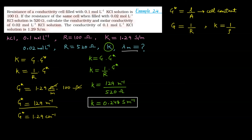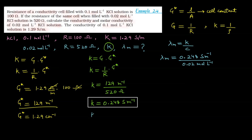और क्या calculate करना है? Molar conductivity। Molar conductivity क्या होता है? λm = κ / c। λm = κ कितना है? 0.248 siemen meter inverse। यहाँ पर unit साथ-साथ लिखेंगे वर्ना question गलत होने वाला है। Divide by concentration — 0.02 mol per liter। यहाँ कुछ cancel नहीं हो रहा। तो इनको change करेंगे — siemen meter inverse को siemen centimeter inverse में। κ = 0.248 siemen / meter, और 1 meter में 100 cm होते हैं, तो नीचे 100 cm जाएगा।